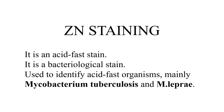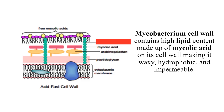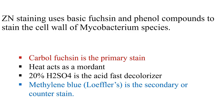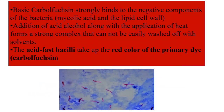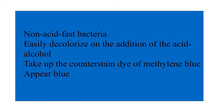The ZN stain is a bacteriological stain used to identify acid-fast organisms, namely Mycobacterium tuberculosis and M. leprae. The mycobacterium cell wall has a high lipid and mycolic acid content, making the cell wall waxy, hydrophobic and impermeable. The ZN staining uses carbol fuchsin and phenol compounds to stain the cell wall. Carbol fuchsin is the primary stain, heat acts as a mordant, 20% H2SO4 is the acid-fast decolorizer, and methylene blue Loffler's is the secondary or counter stain. Carbol fuchsin strongly binds to the mycolic acid and lipid cell wall. Addition of acid alcohol along with heat forms a strong complex that cannot be washed off. The acid-fast bacilli take up the red color of the primary dye, carbol fuchsin. Non-acid-fast bacteria easily decolorize on addition of acid alcohol and take up the counter stain methylene blue, appearing blue.